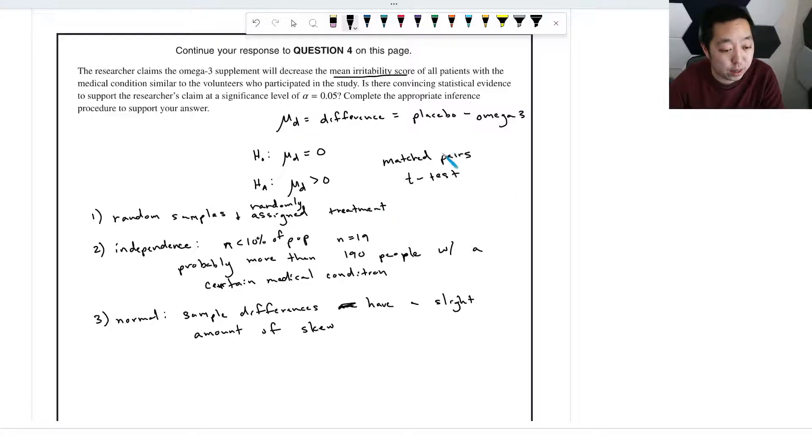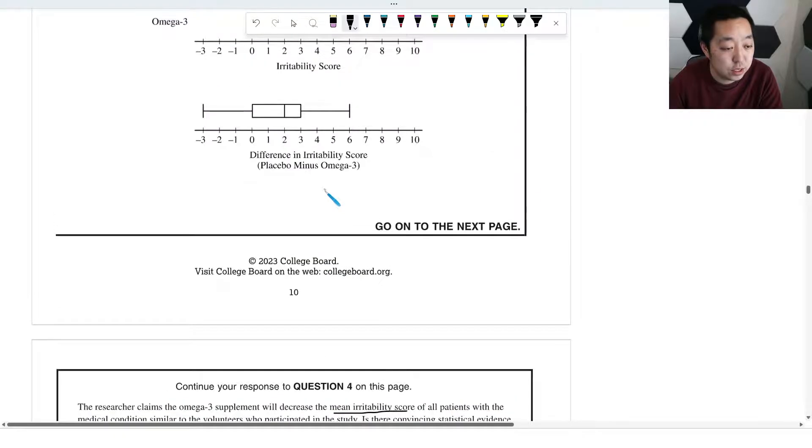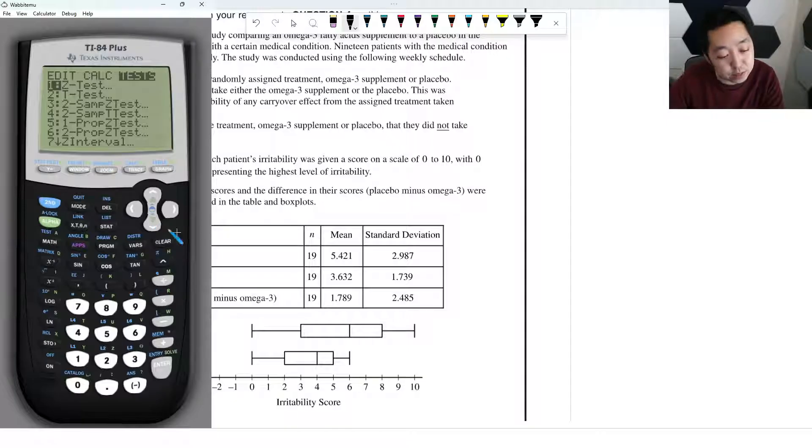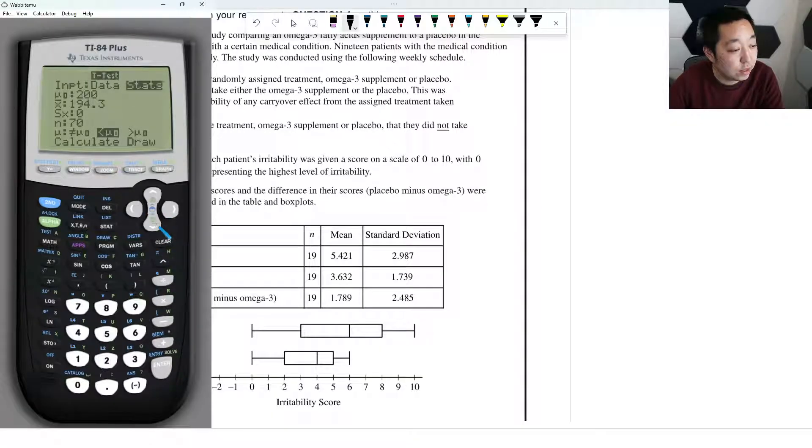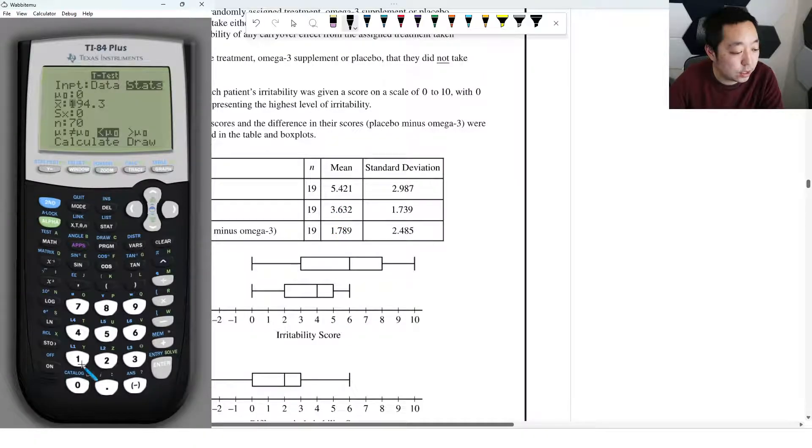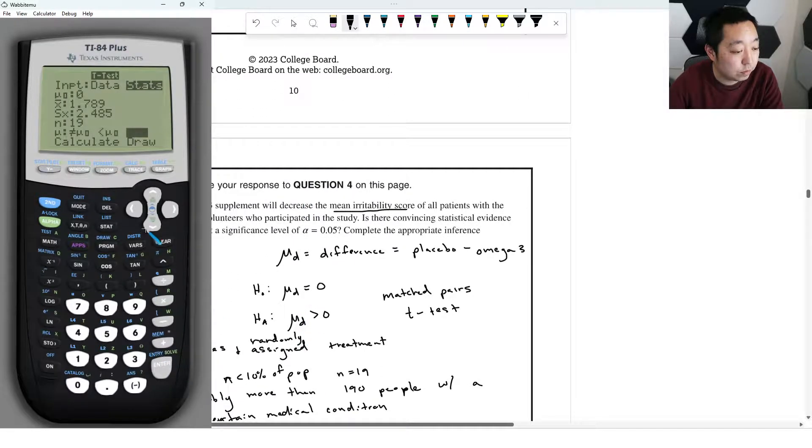Now you're going to run your matched pairs test on the differences. I'm going to bust out the calculator. We are going to do stat tests, the t-test itself. We're doing the stats, not the data. The null hypothesis is that it's zero. The sample mean is 1.789, the standard deviation is 2.485, and n is 19. And we care about doing greater than zero.